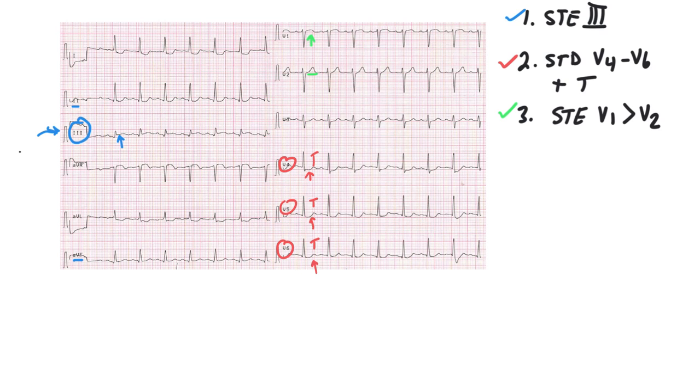There are also some other things of note that I want to point out. You can see ST depression in lead 1 here. And some ST depression in AVL. And these, of course, are reciprocal to the inferior leads. So we would actually expect that if we're thinking about an inferior STEMI. And that's, in fact, what, in many cases, the Aslanger pattern suggests, is an inferior STEMI.